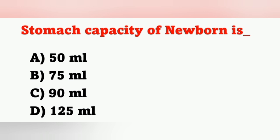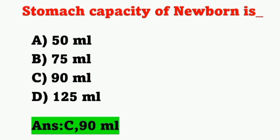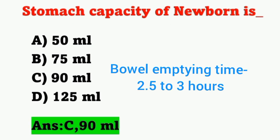Next question: Stomach capacity of a newborn is? Options: A) 50 ml, B) 75 ml, C) 90 ml, D) 125 ml. The newborn's stomach capacity is around 90 ml. Option C is the correct answer. Another important point: the bowel emptying time of a newborn is about two and a half to three hours.